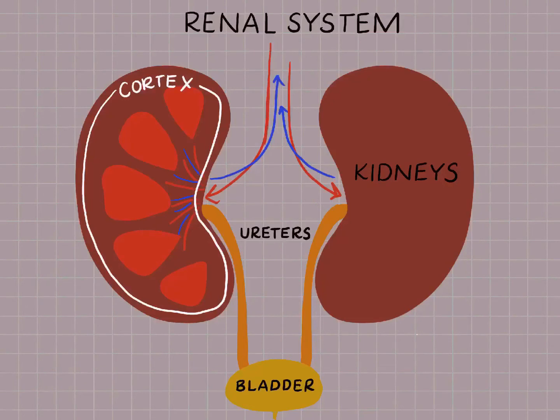The blood flow going to the kidney is coming directly from the heart. In fact, about a third of the cardiac output from the heart goes to the kidney via the descending aorta.